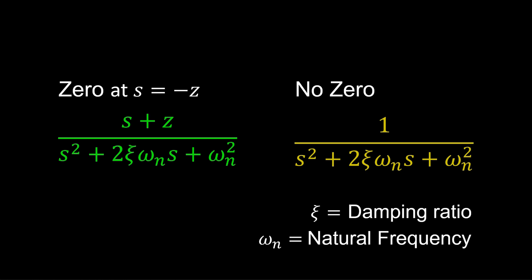Now we rephrase the question. How does the presence of a zero lead to such different responses?